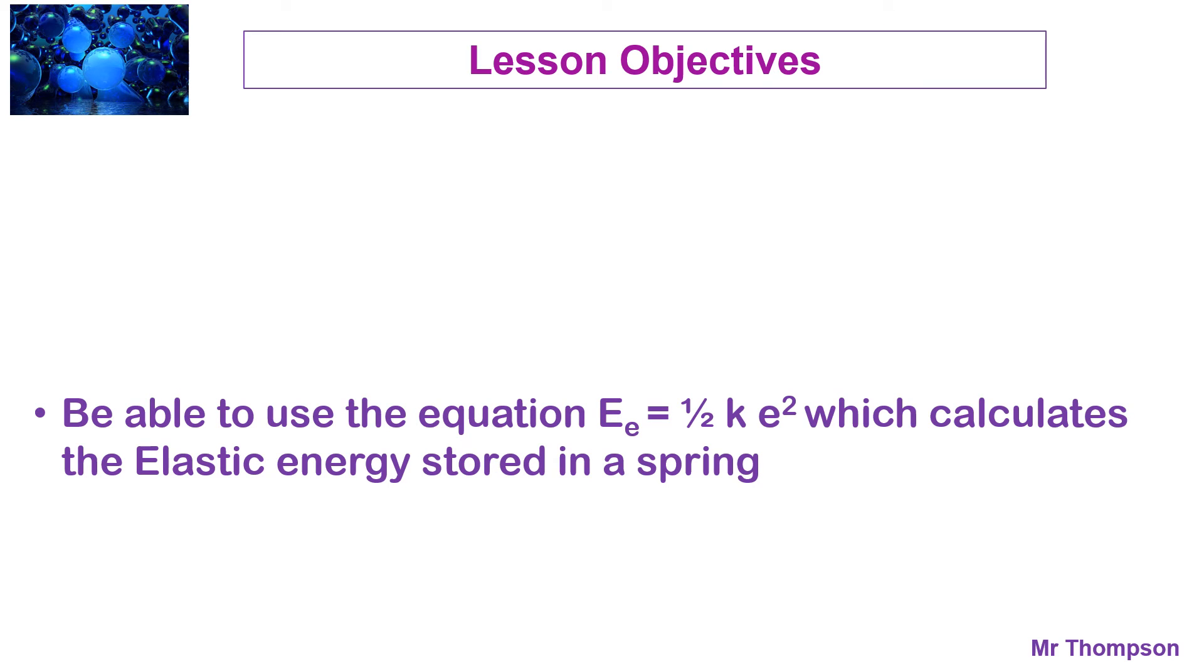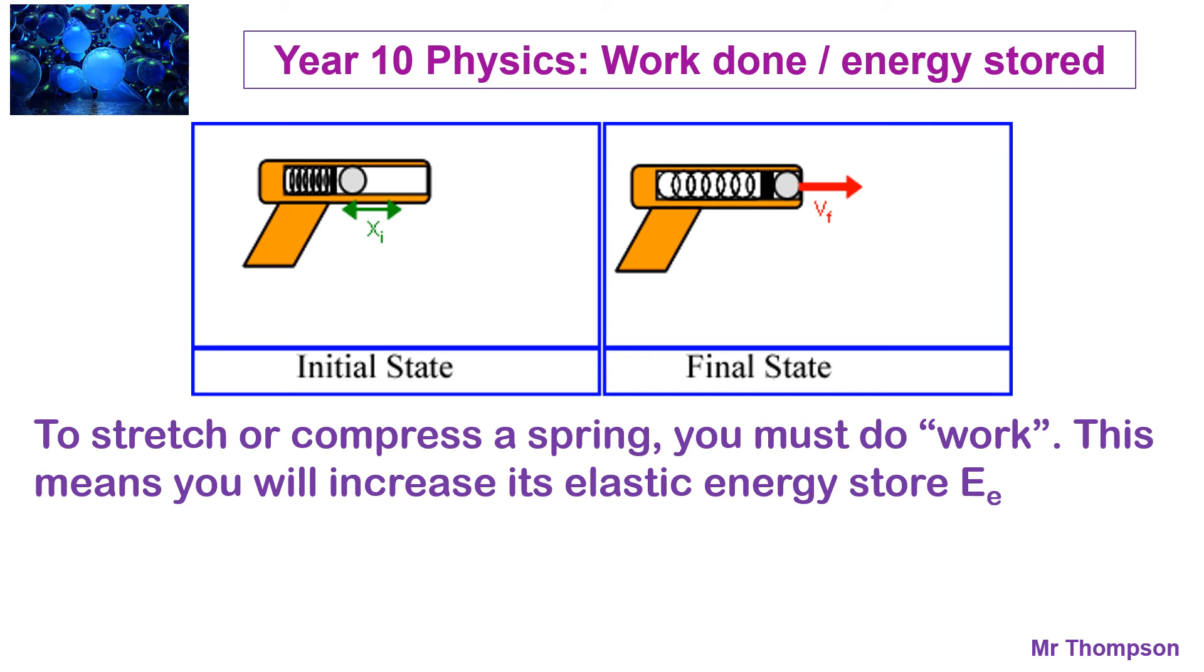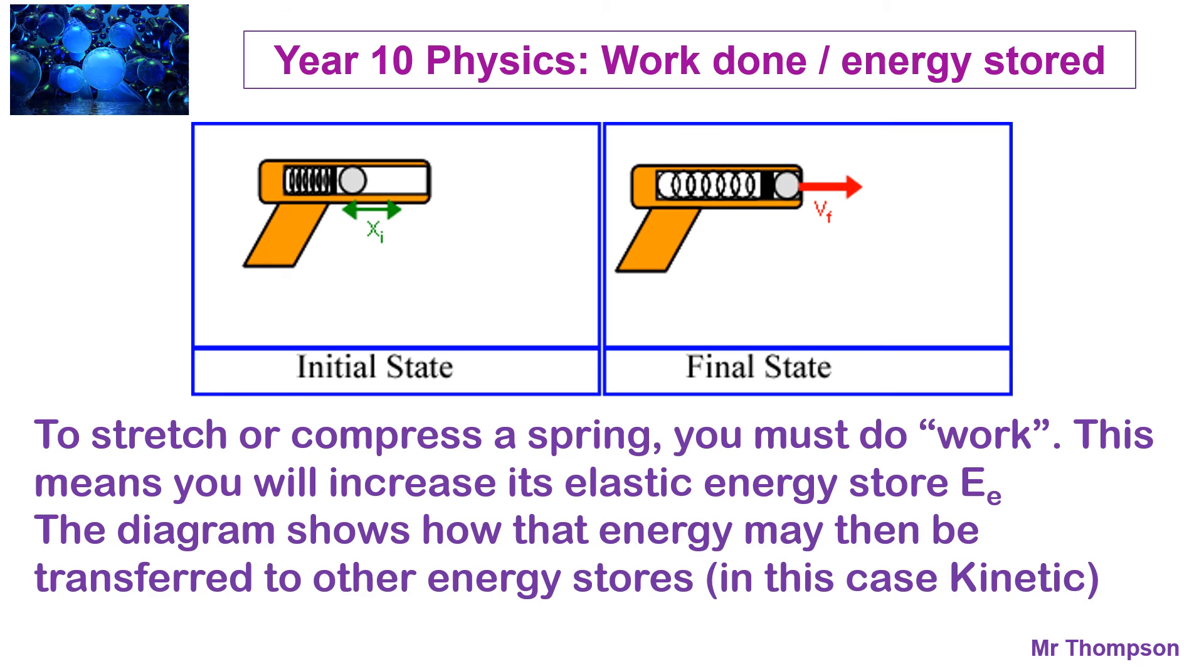And finally, you need to be able to use the equation for the elastic energy stored. You don't have to recall this one. It will be given to you on the equation sheet in the exam. So, let's look at some examples here. Here's a little toy gun, where in the initial state, you are compressing the spring, and then you're going to release it, and the ball will fire out. So, to stretch a compressor spring, you must do work to it. This means you will increase the elastic energy store. And then, the diagram shows how the energy may then be transferred to other energy stores. In this case, kinetic energy, when you fire the gun. Spring expands and fires the gun out. So, the elastic energy turns into kinetic energy.